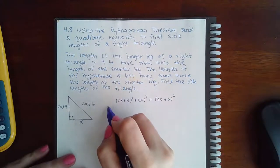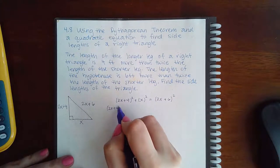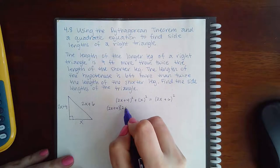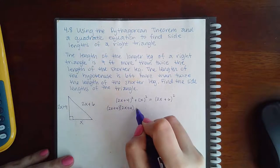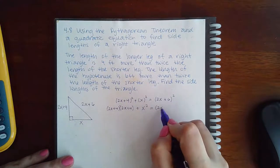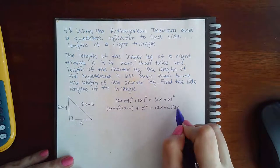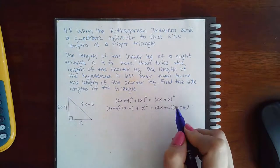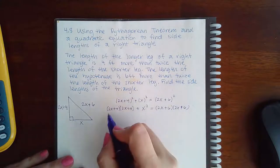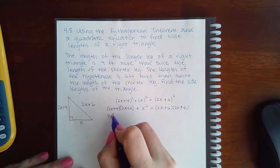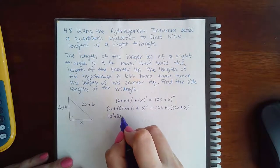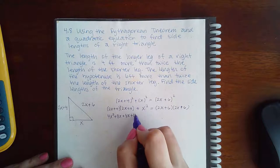So if we expand this out, this is just x squared. Expand this one out. And then foil these out. We get 4x squared plus 8x plus 8x plus 16.